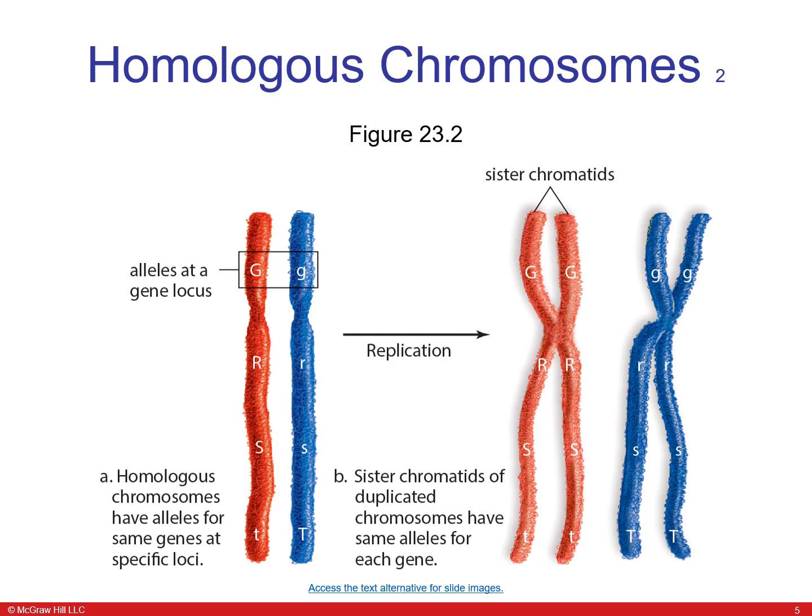Here is an example of homologous chromosomes as they go through replication and produce sister chromatids.